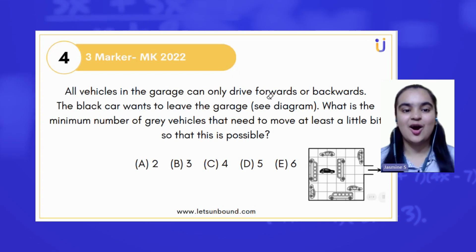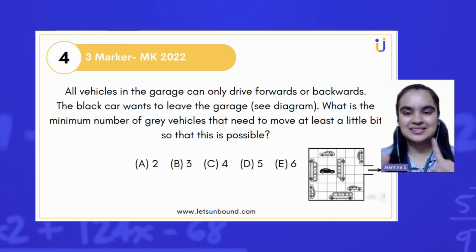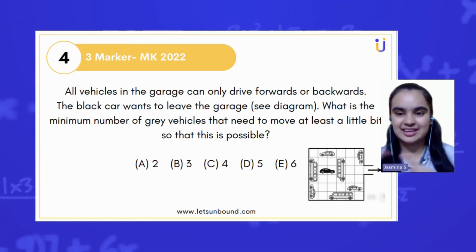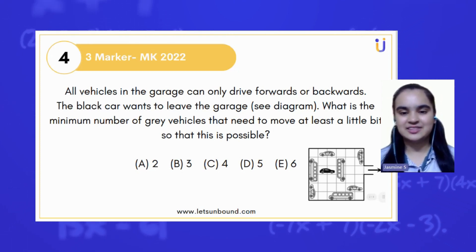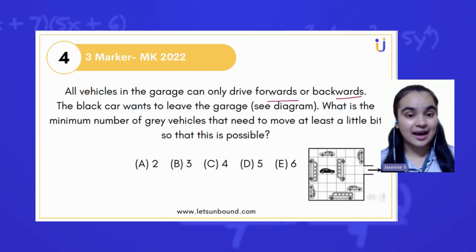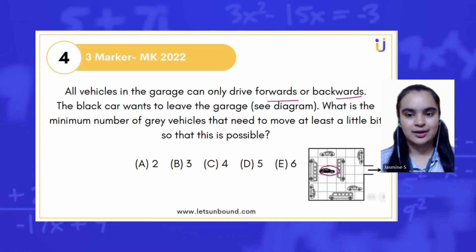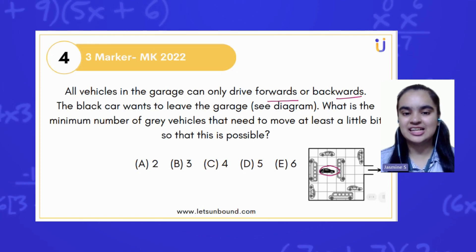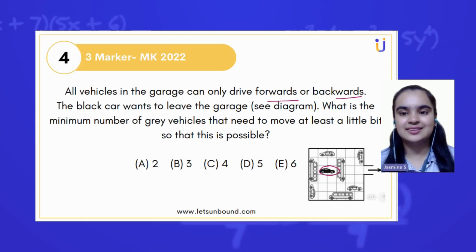So here is the question. All vehicles in the garage can only drive forward or backward. So basically, they have said no to right and left. We cannot go right, we cannot move here, and they are diagonal right and left. We can only go forward or backward. The black car wants to leave the garage. What is the minimum number of gray vehicles that need to move at least a little bit so that this is possible?